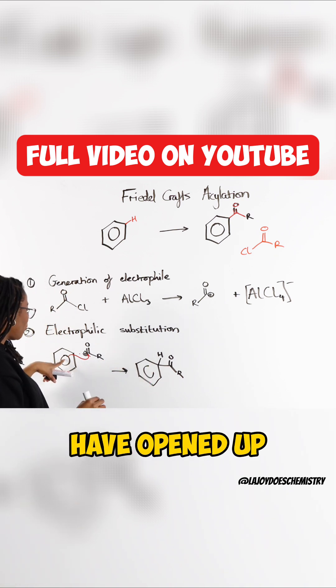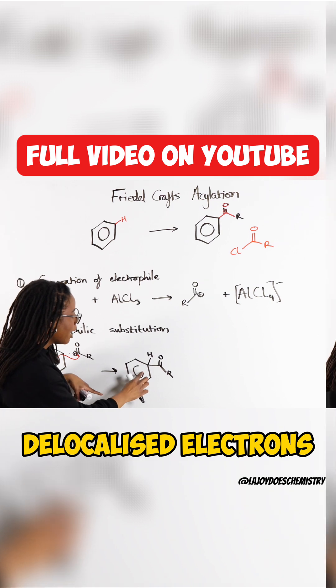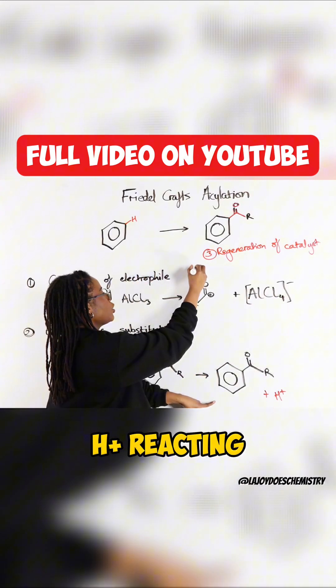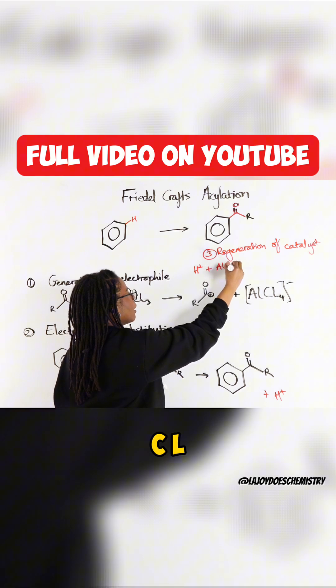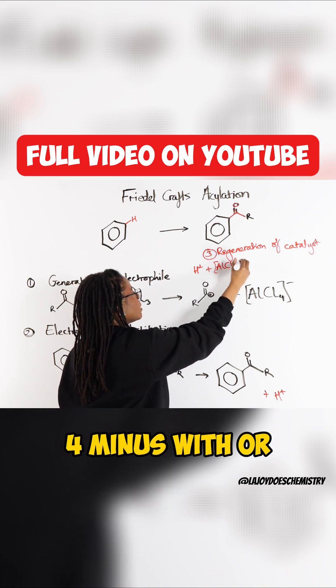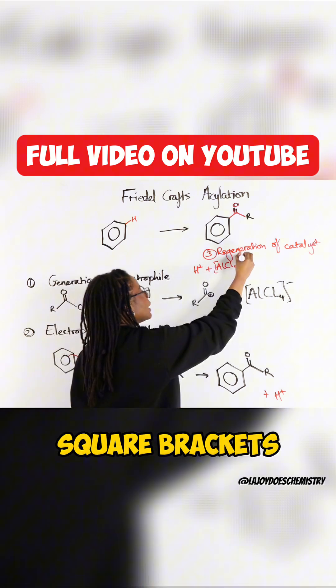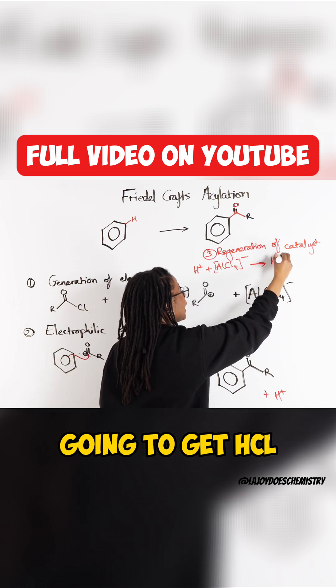but because we have opened up, we've disrupted these delocalised electrons, where we have our H+ reacting with our AlCl4- with or without the square brackets, and then we are going to get HCl